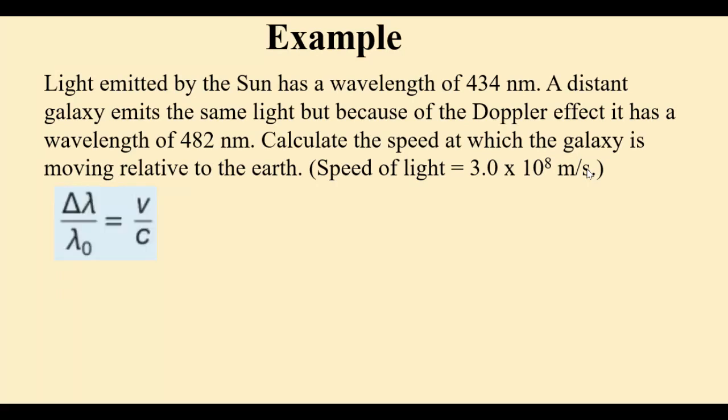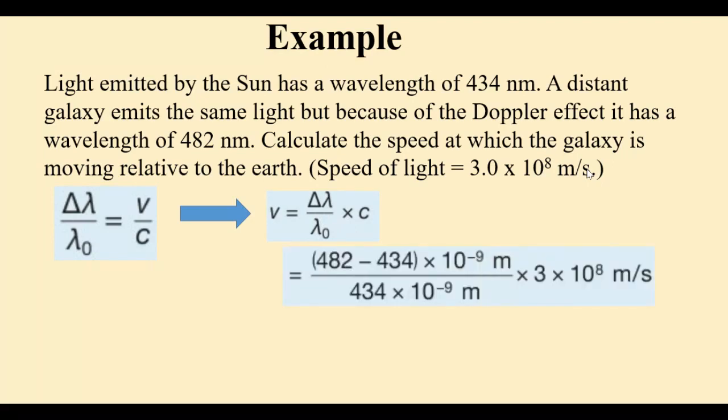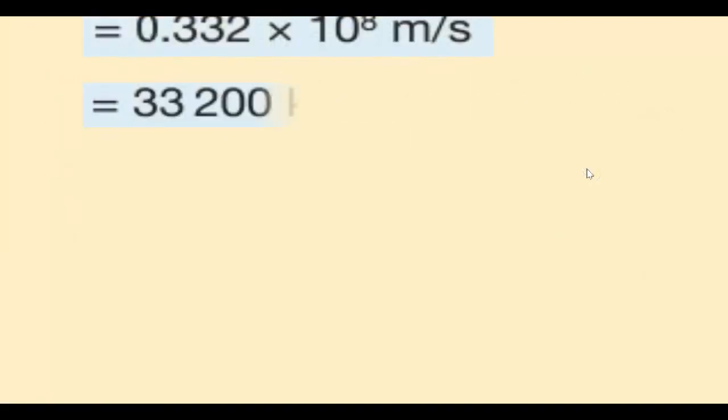Since we know our formula is Δλ/λ₀ = v/c, this implies that the velocity v equals the change in wavelength over the reference wavelength times the speed of light. We can substitute as follows and simplify, so that our final answer is 33,200 kilometers per second.